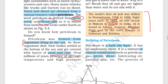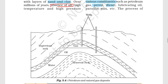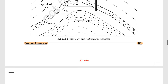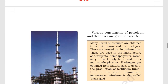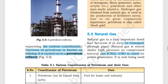An important concept is the refining of petroleum. Petroleum is a dark oily liquid and is a mixture of various constituents, including petroleum gas, petrol, diesel, lubricating oil, and paraffin wax. The process of separating these different constituents is known as petroleum refining, and a petroleum refinery is the place where it is done.